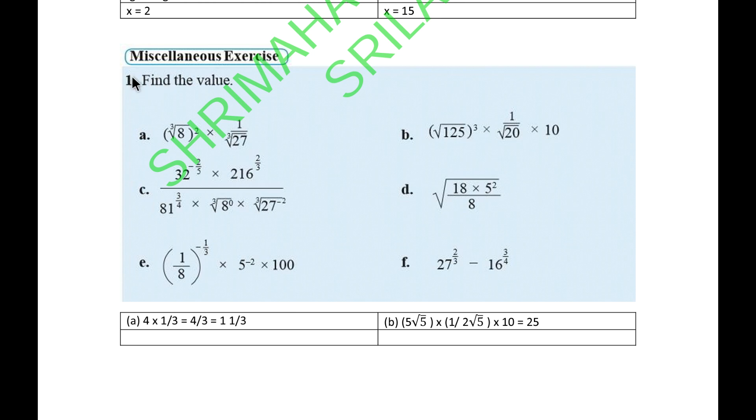I'll explain from the first question onwards. They say find the value. Part A is the cubic root of 8 to the power 2 multiply 1 over cubic root of 27. The cubic root of 8 is 2, so 2 to the power 2 is 4. The cubic root of 27 is 3, so it's 4 multiply 1 third, which is 4 over 3 or 1 and 1 over 3 as a mixed fraction.